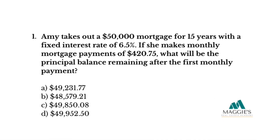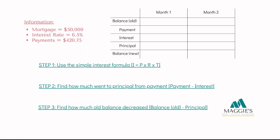Problem one: Amy takes out a $50,000 mortgage for 15 years with a fixed interest rate of 6.5%. If she makes monthly mortgage payments of $420.75, what will be the principal balance remaining after the first monthly payment? I have my mortgage amount of $50,000, my interest rate of 6.5%, and my payment amount.